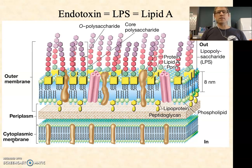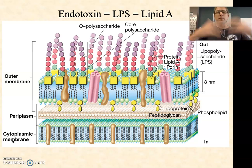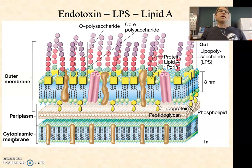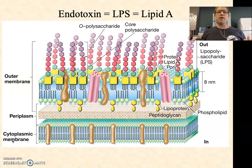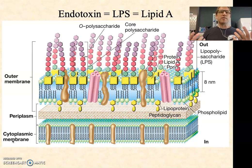Technically the term endotoxin just means a toxin that's interior to the cell — it's not being secreted by the cell. Most often though, in reality, we simply refer to endotoxin as lipid A, or we refer to lipid A as endotoxin. Lipid A is the most common endotoxin.